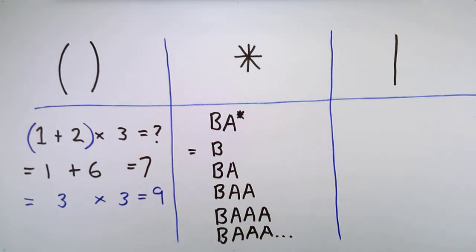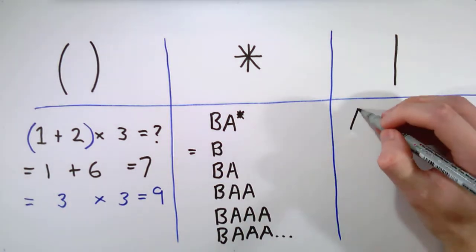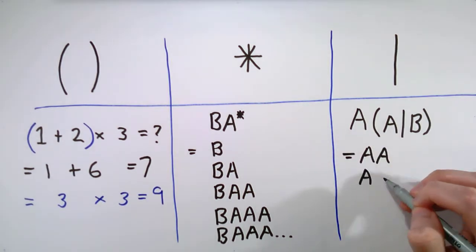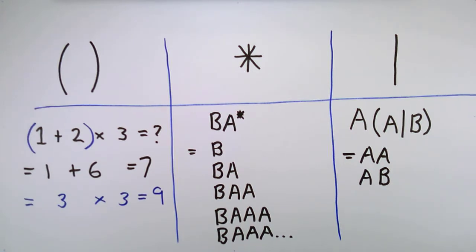Lastly, we have the alternation symbol. This can be read as a choice, so the expression A parentheses A bar B parentheses matches both AA and AB. We usually refer to this as bar and read it as OR.